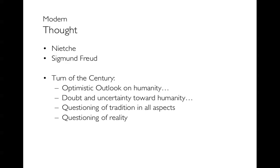In general, the turn of the century is full of several paradoxical thoughts. It's very optimistic on one hand — humanity is full of great potential, and through reasoning and new technology we'll be able to make the world a better place, moving toward greater equality. But there's also doubt and uncertainty toward humanity, that we are still capable of great harm toward one another, great chaos, and war. There's a questioning of tradition in government, religion, family, and every part of society, and even a questioning of reality. Through psychology, we wonder what things really happened versus what I think happened, or what things have I forgotten — questioning what our true experiences have been.